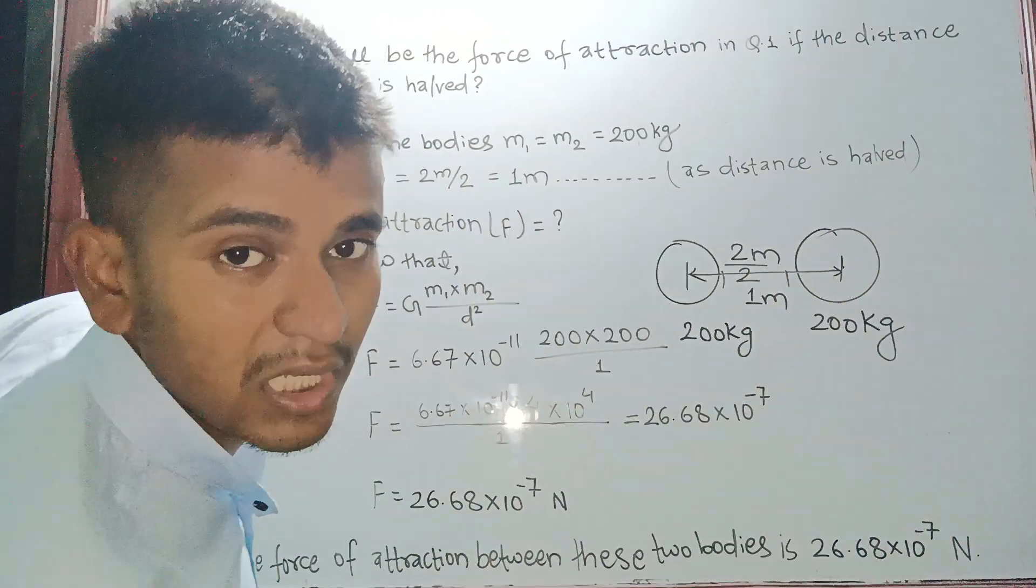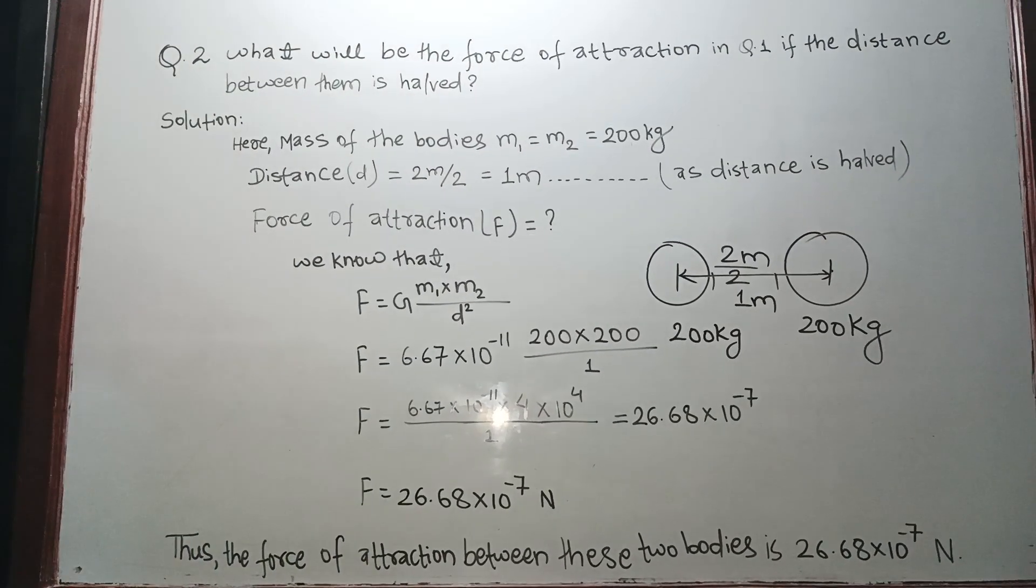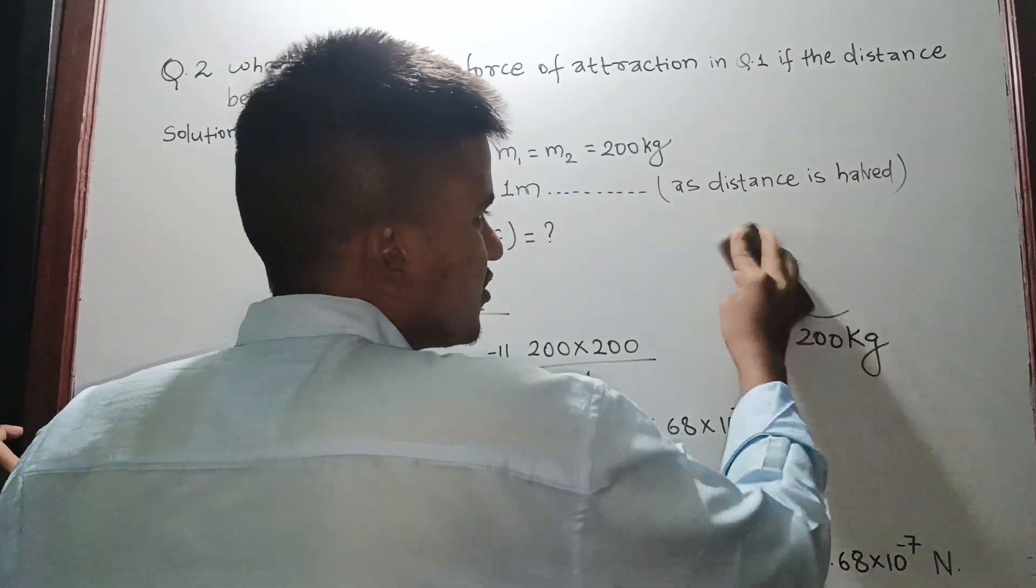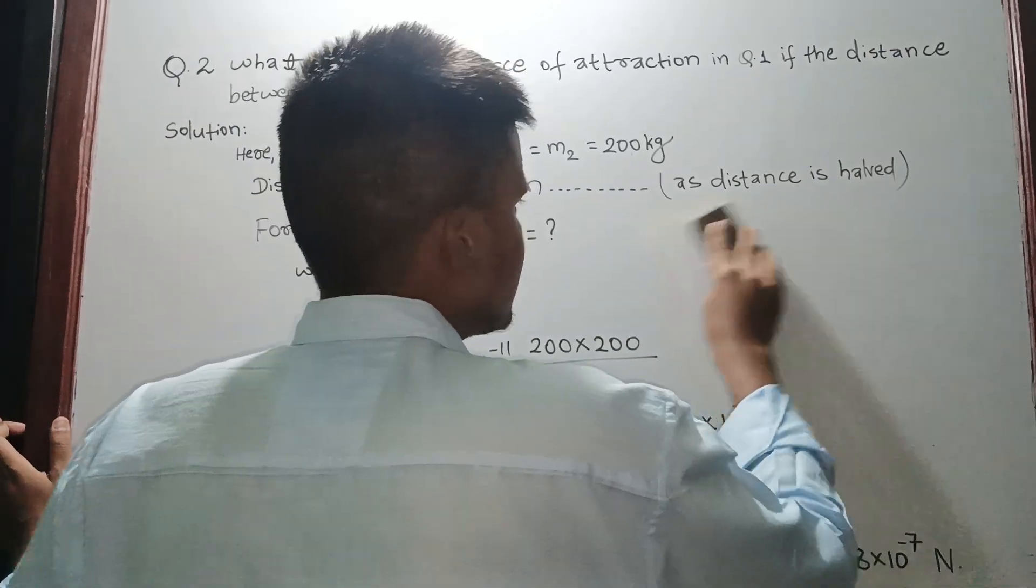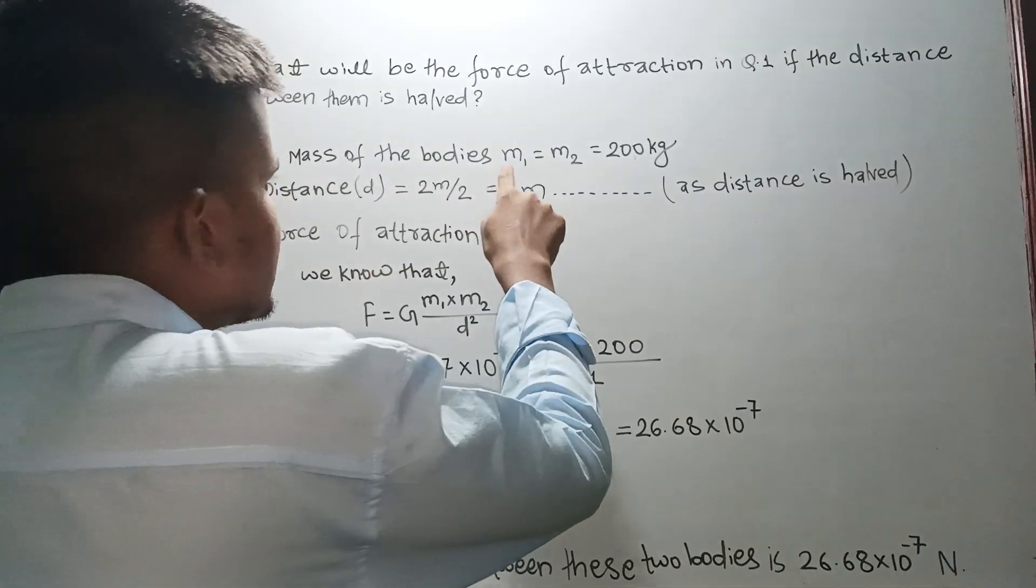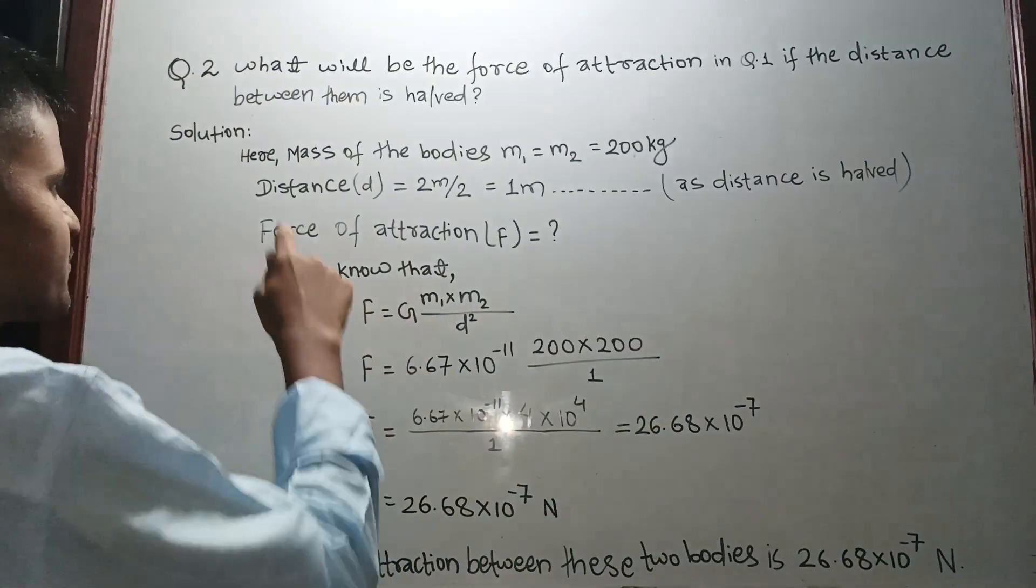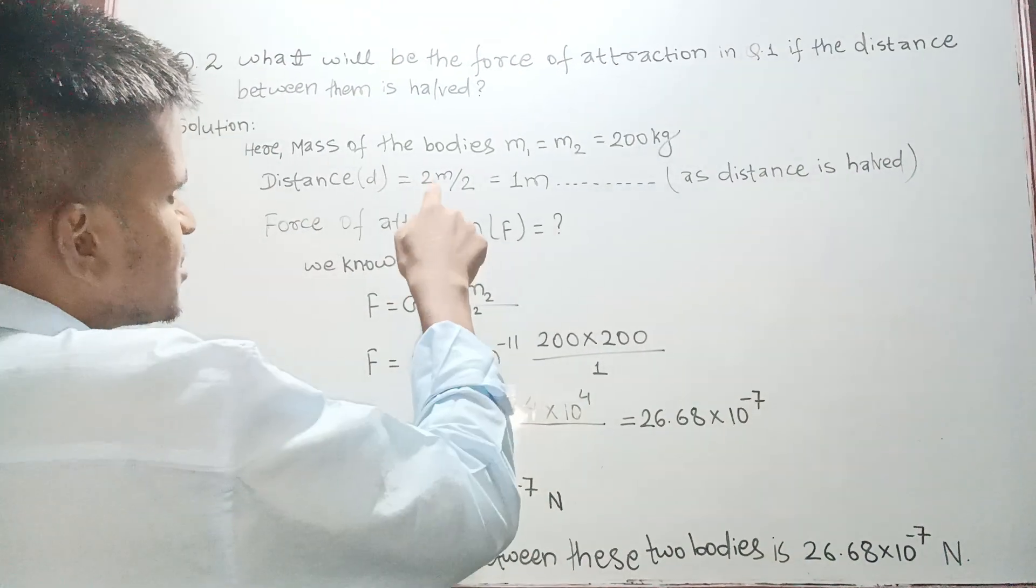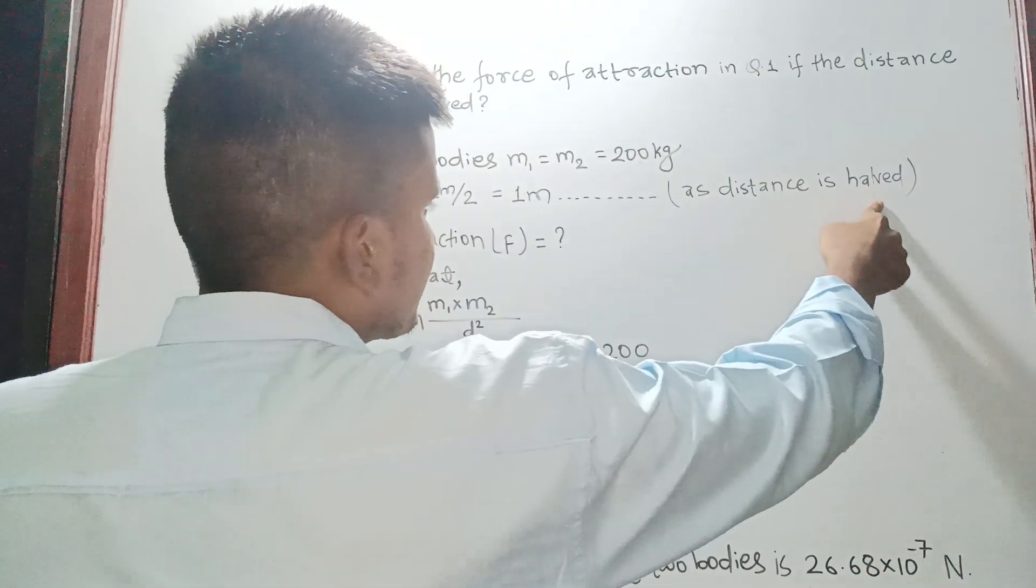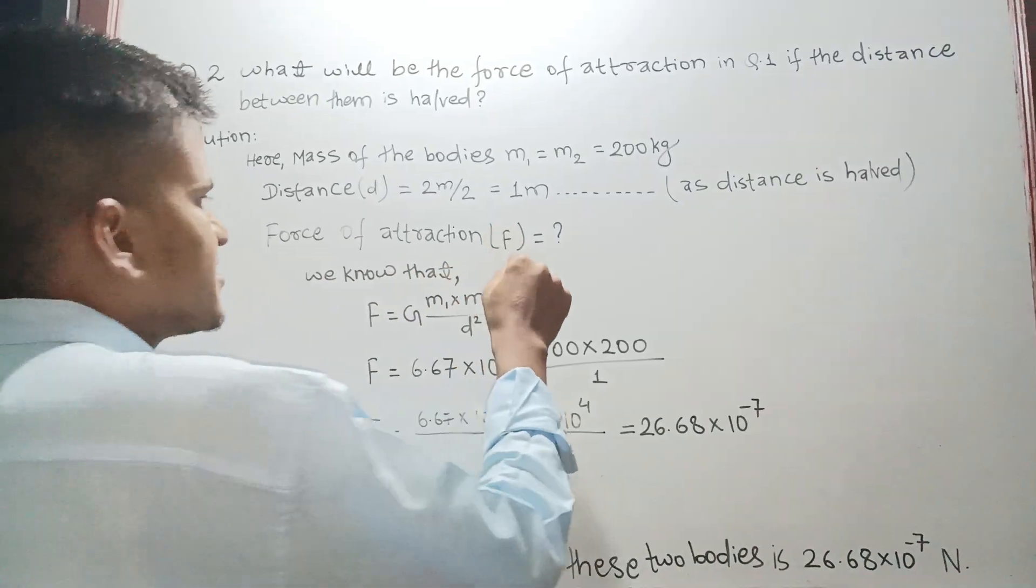So the distance has become 1 meter. Then what is the force of attraction? We will look at this figure. Now see here, here the mass of the bodies m₁ and m₂ equals to 200 kg. Distance d equals to 2 meters divided by 2, it will be 1 meter as the distance is half. The force of attraction F equals to what?